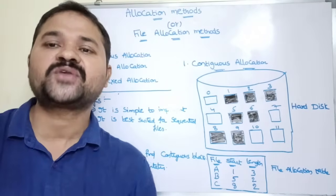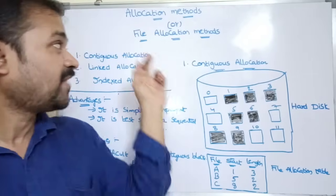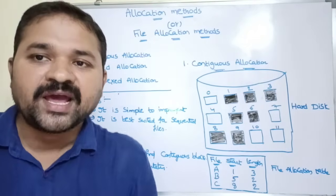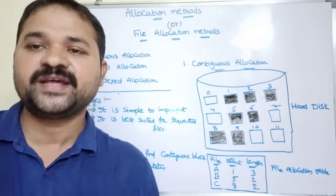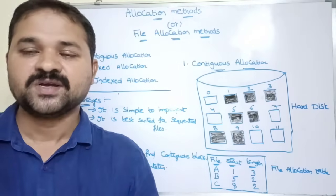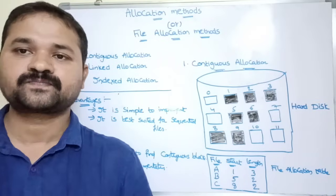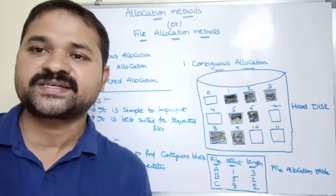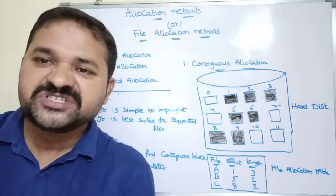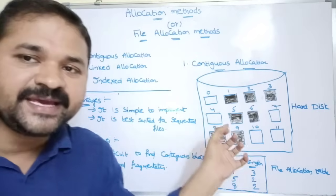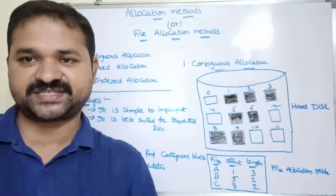Let's see about file allocation methods. Generally, files are stored in secondary storage devices such as hard disk. File allocation methods allow the operating system to allocate hard disk space for files so that the space can be used in an effective manner and the files can be accessed in a faster manner. The operating system allocates disk space for files keeping two goals in mind: utilizing the hard disk space efficiently, and enabling faster file access.